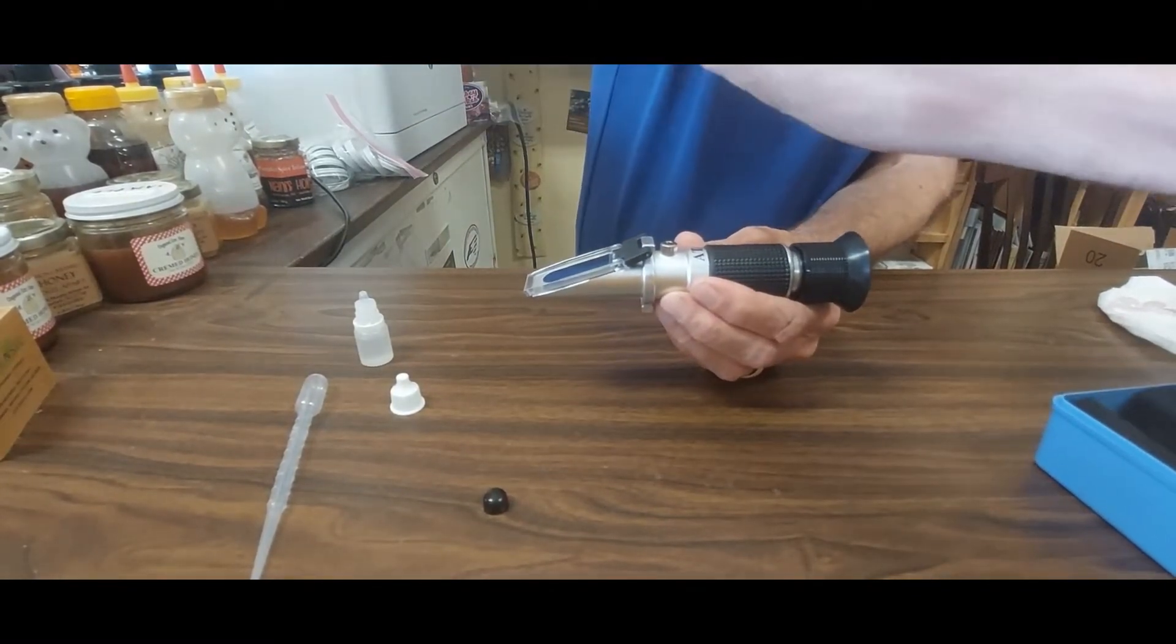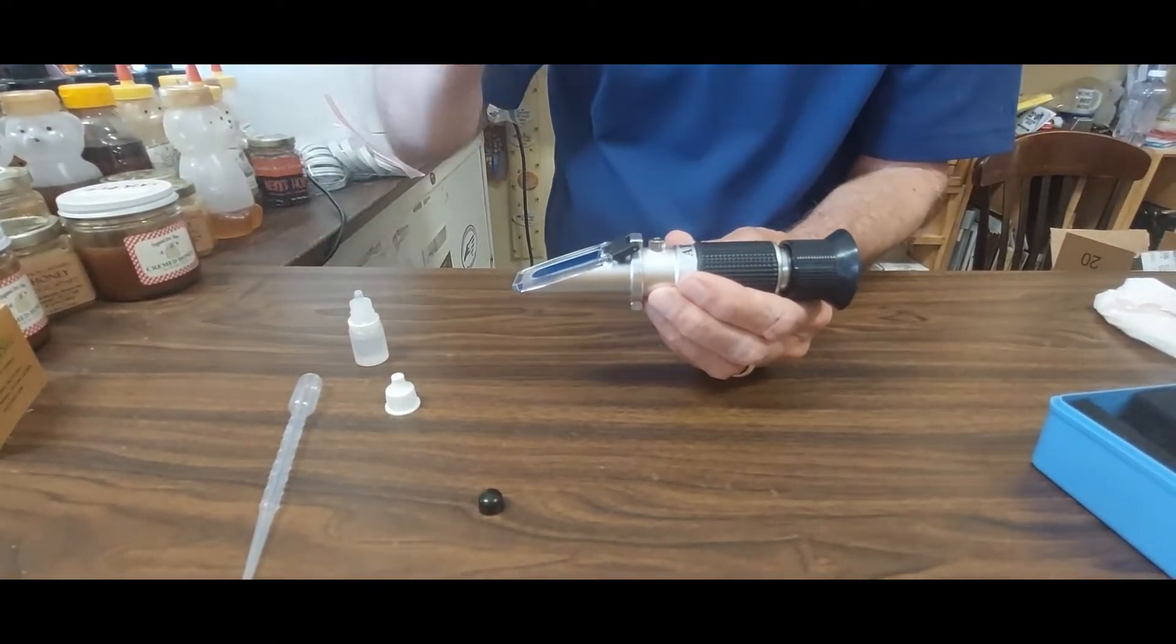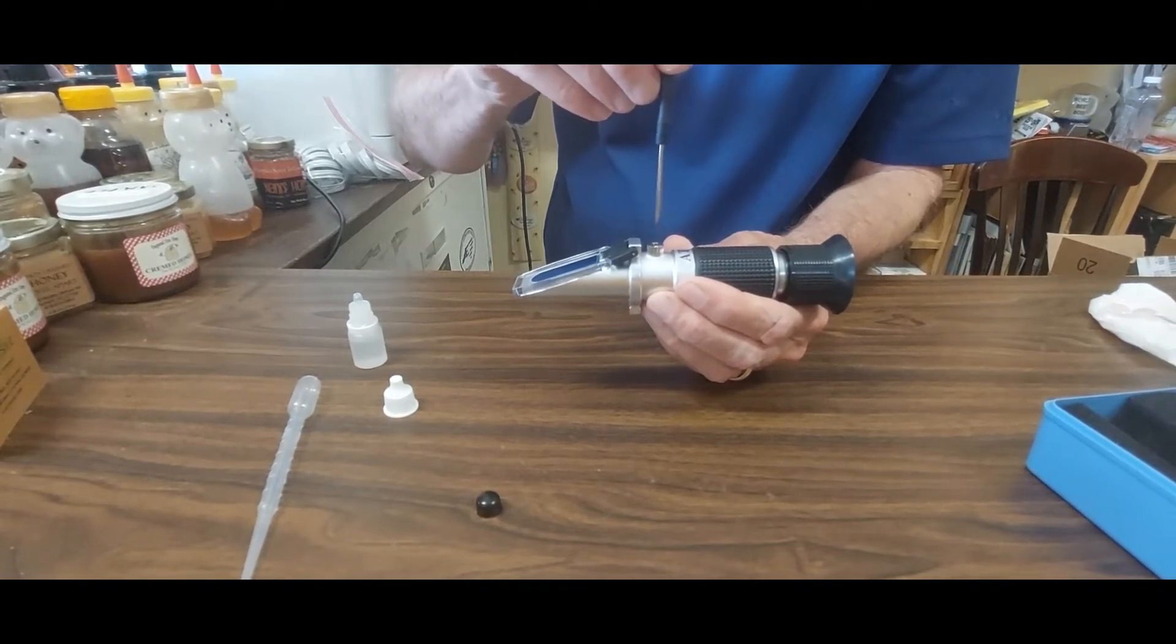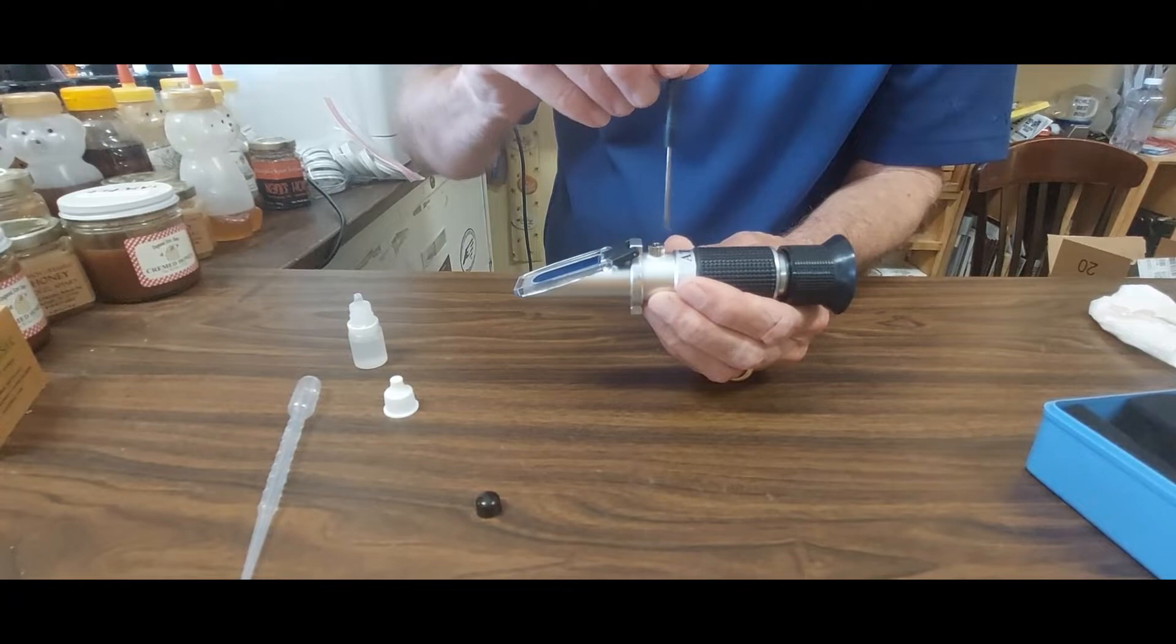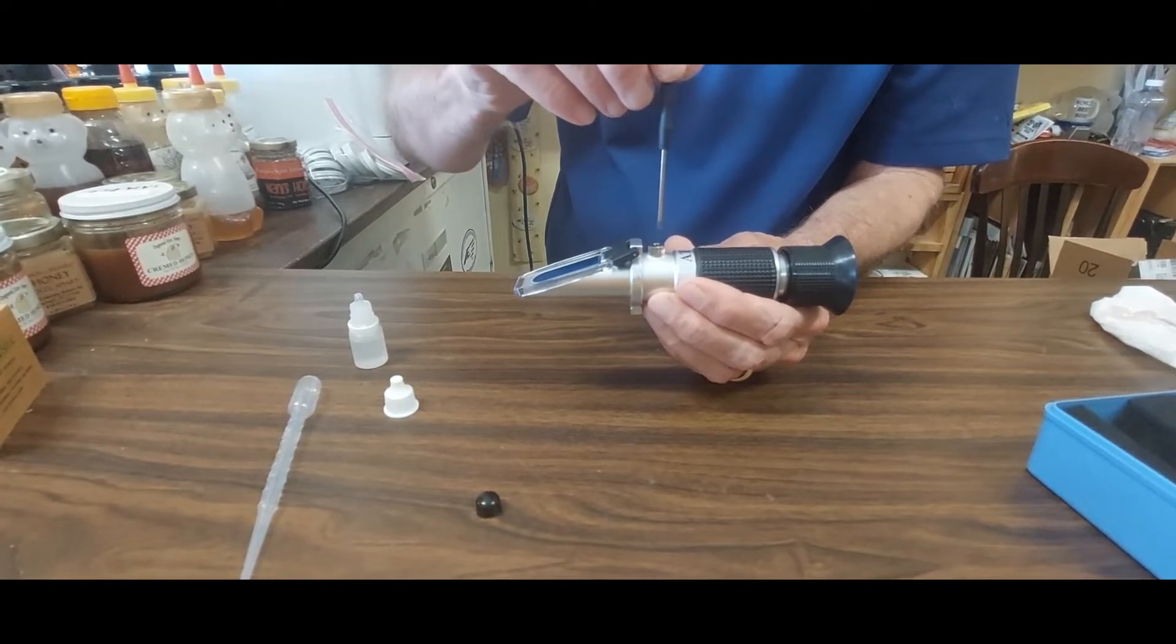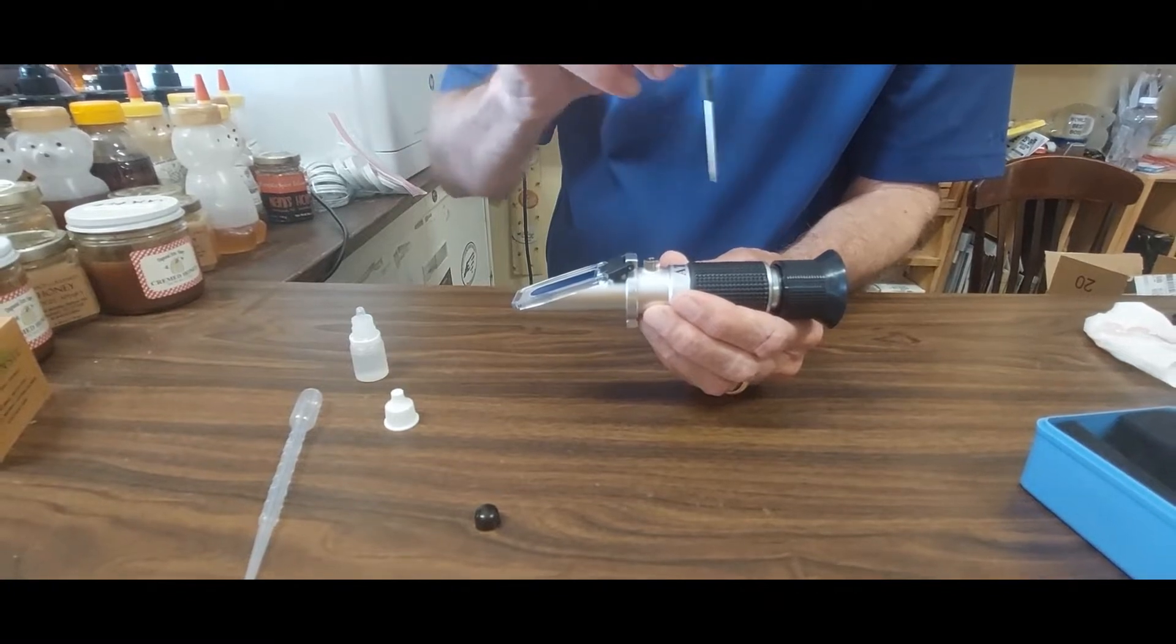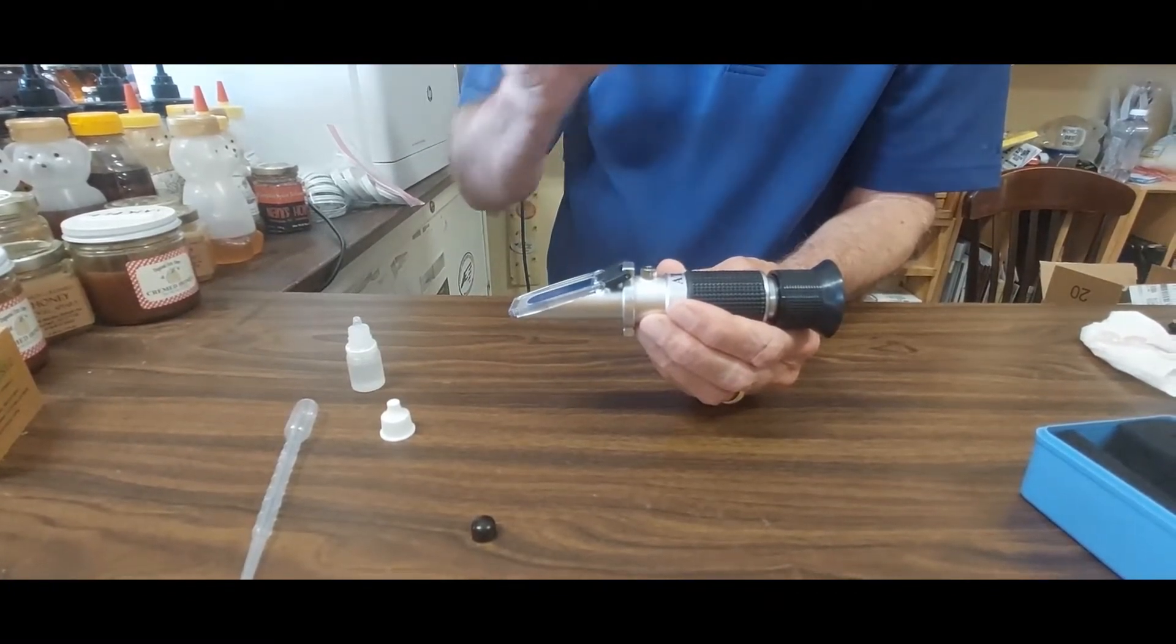And then we have a small screwdriver, and there's a small adjusting screw, and while looking through the eyepiece, you would just turn this little screw back and forth until it's reading on the line that matches the value of your calibration fluid.